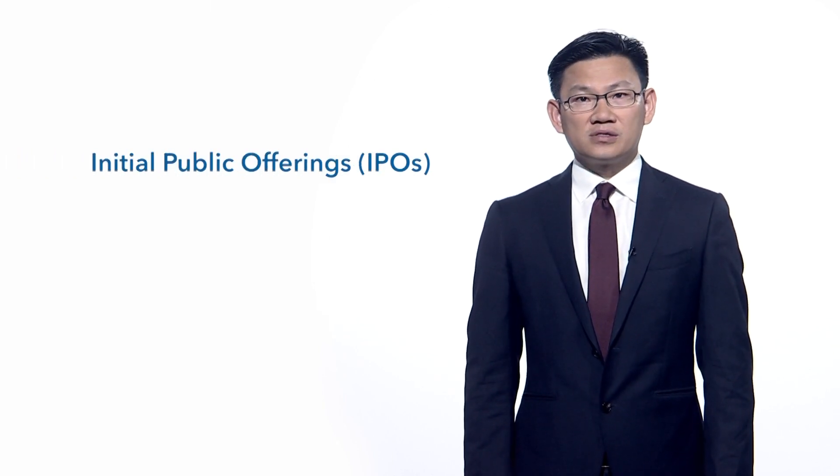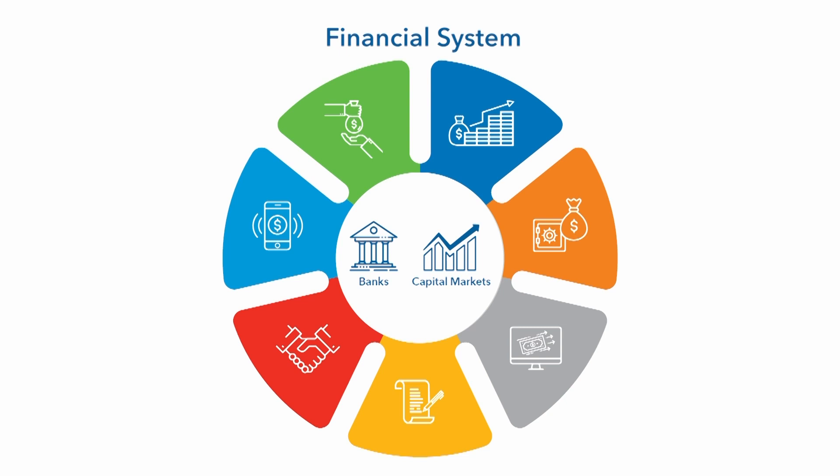Equity markets also allow exit strategies for venture capitalists by listing companies in the stock market, known as initial public offerings. Also, each segment of the financial system overcomes market frictions in different ways. For instance, public capital markets have an advantage in a high-information environment and do not need close relationships among parties, while banks have an advantage in a relationship-based environment with limited information.